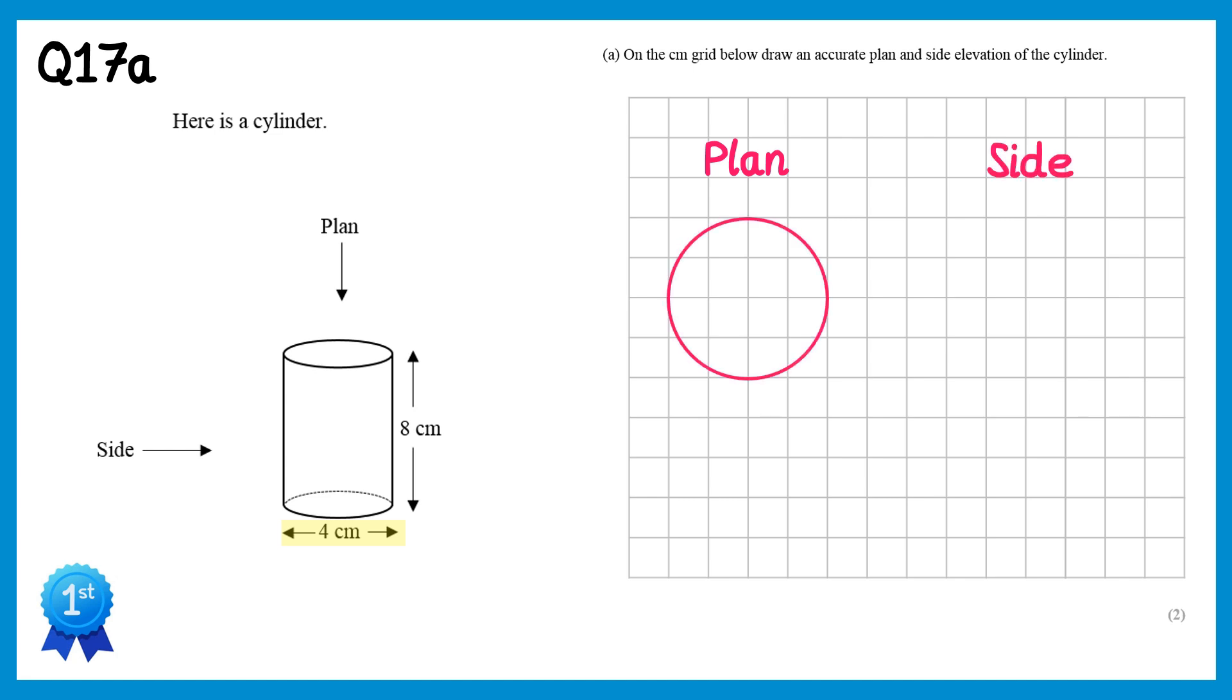For the side elevation, you'd see a rectangle. The height of that rectangle would be 8, and the base of that rectangle would be 4cm, the same as the diameter of the circle. So you would draw 4cm across, 8cm up, and then complete that rectangle.